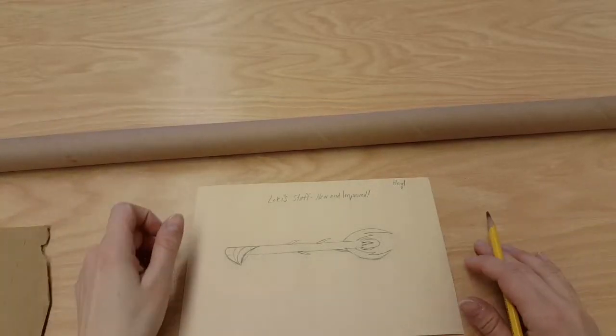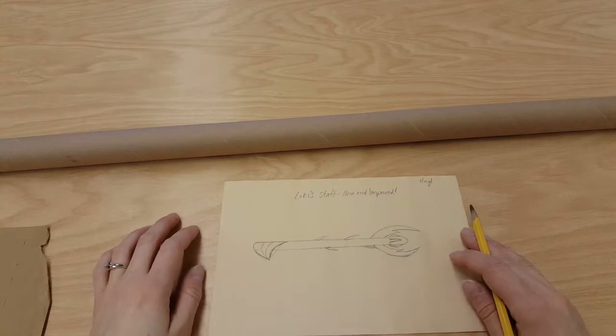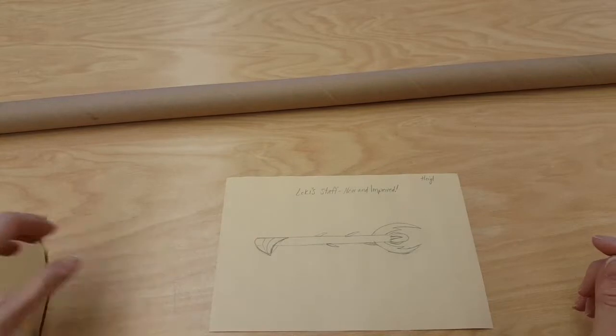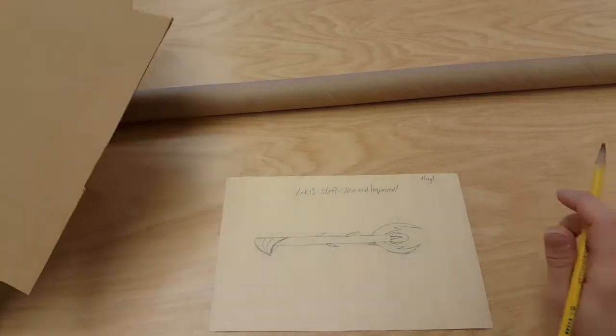Today we're going to start building our staff inspired by the Chitauri scepter. It's featured in the Avengers, also known as Loki's staff because that's the one he uses. It has the mind stone in it.